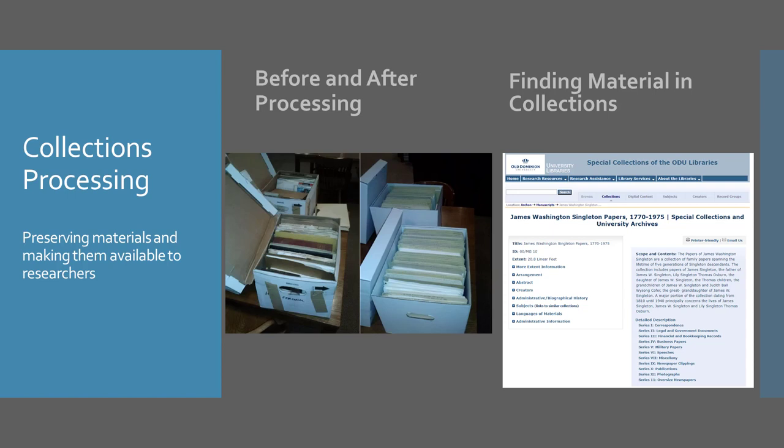Finally, a research guide or finding aid is created to let researchers know what is in the collection, along with a container listing of boxes and folder titles. Most finding aids today are available on the web. On the slide, you'll see before and after images of processing — the image on the far left shows a new collection that just came in from the donor, unorganized and in old acidic boxes and folders, while the image to the right shows it arranged in new acid-free folders and boxes. On the right-hand side of the screen is an example of one of the finding aids we have online here at the ODU archives.